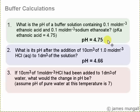So in the first part we calculated 4.75 as the buffer pH. Then that went down to 4.66 when we added some acid.